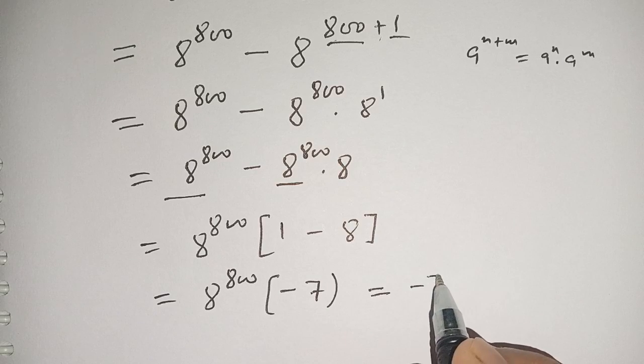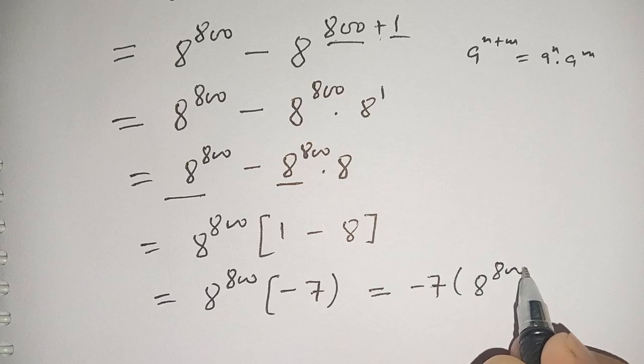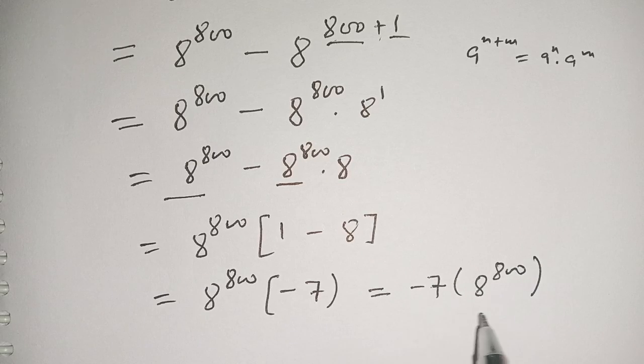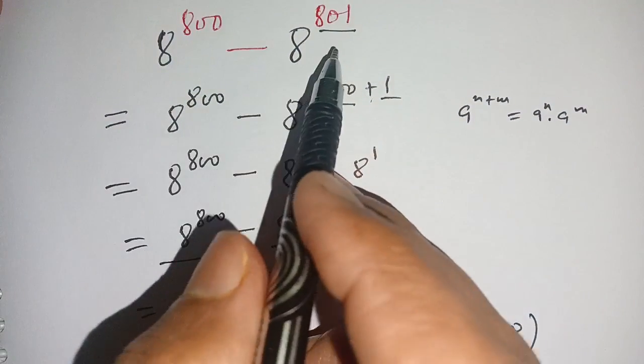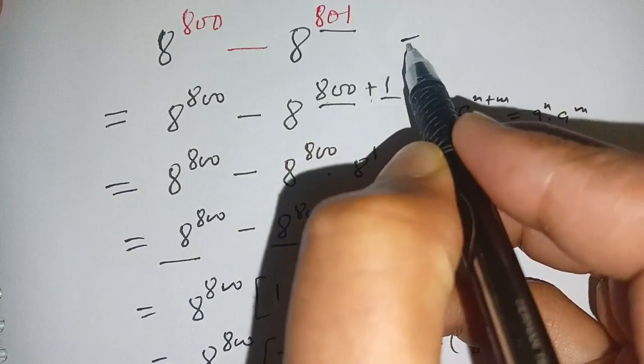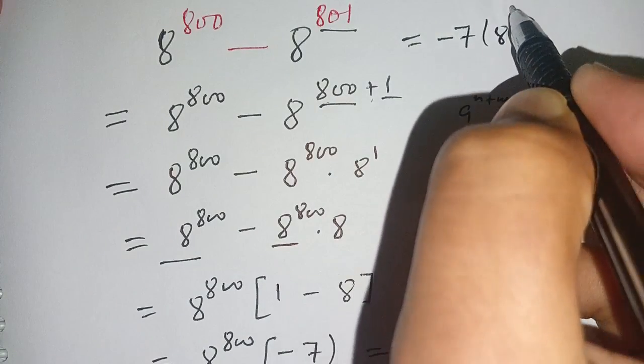This is equal to minus 7 times 8 power 800, which is in the simplest form. Thus 8 power 800 minus 8 power 801 equals minus 7 times 8 power 800.